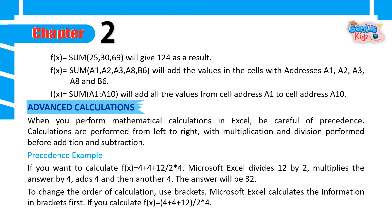Advanced Calculations: When you perform mathematical calculations in Excel, be careful of precedence. Calculations are performed from left to right, with multiplication and division performed before addition and subtraction. Precedence Example: If you want to calculate equals 4 plus 4 plus 12 divided by 2 multiply 4, Microsoft Excel divides 12 by 2, multiplies the answer by 4, adds 4, and then another 4. The answer will be 32. To change the order of calculation, use brackets. Microsoft Excel calculates the information in brackets first.